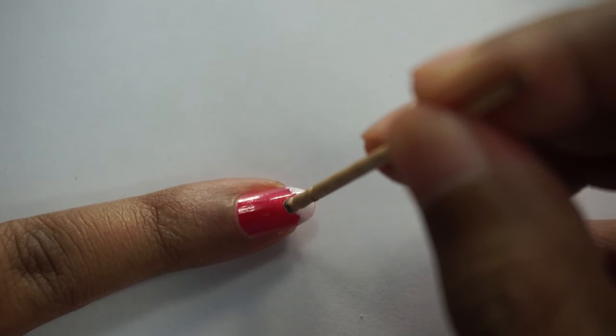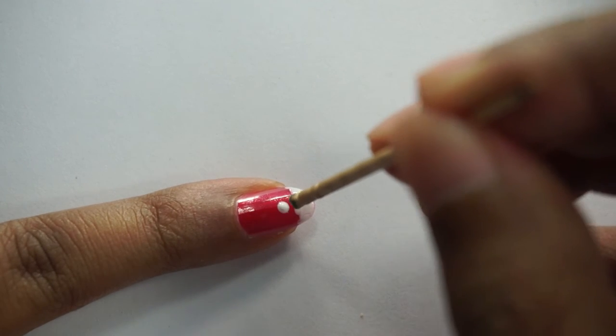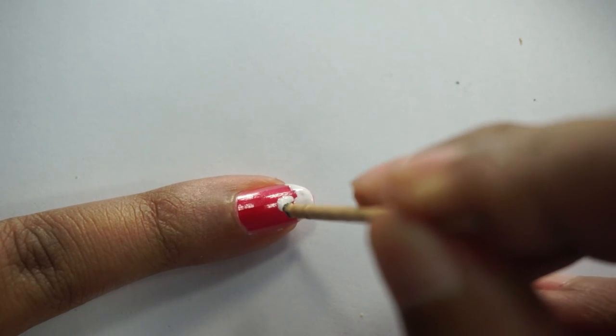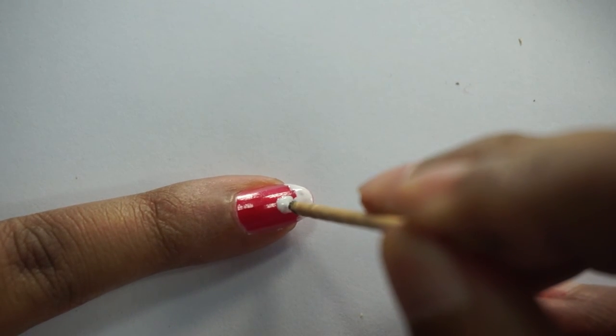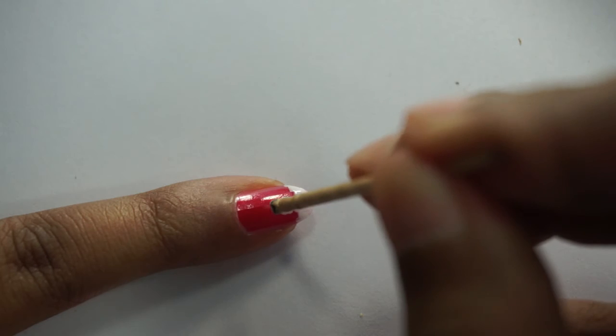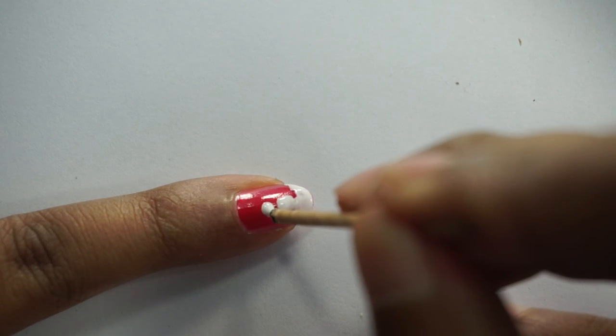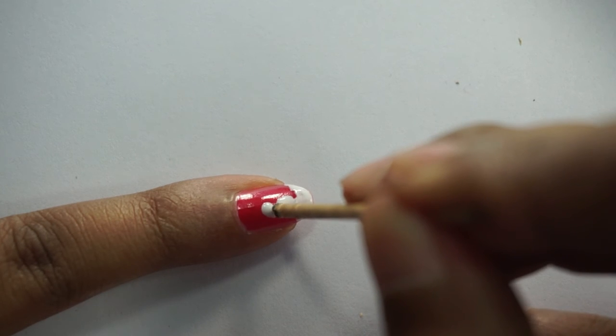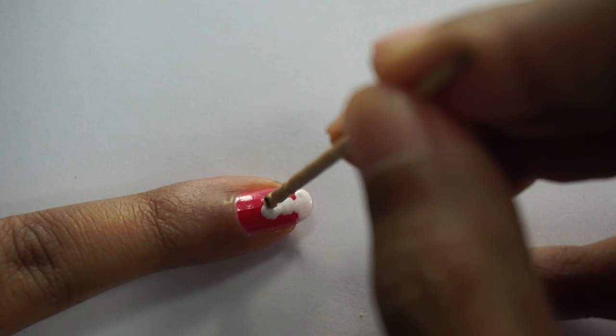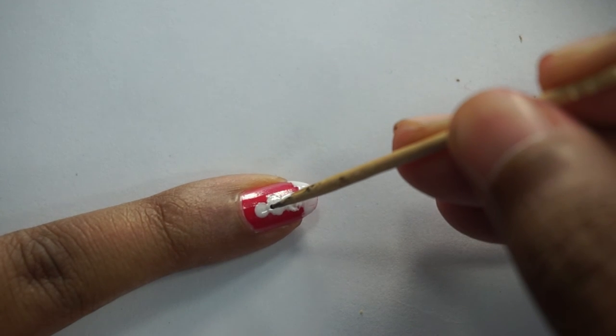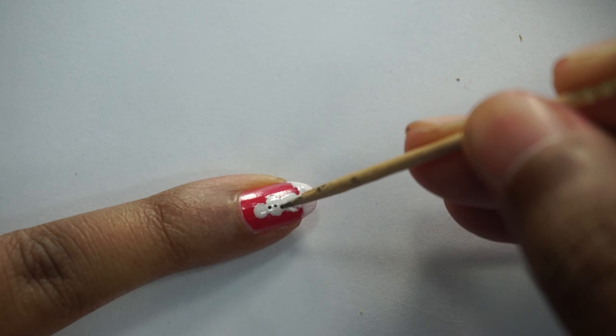Now with the help of a toothpick, apply three big dots. You don't have to worry about the finish, it can be uneven. This creates the body of the snowman. Allow this to completely dry. Using black nail polish, create buttons, eyes and arms, thus creating the snowman.